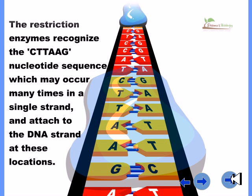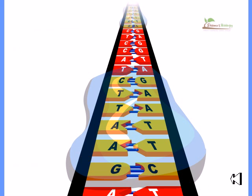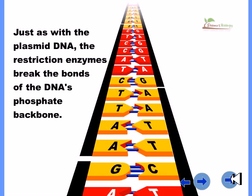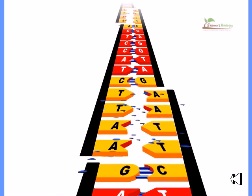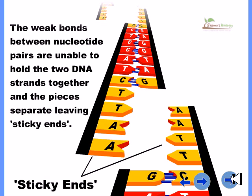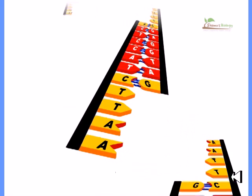The restriction enzyme recognizes the CTTAAG nucleotide sequence which may occur many times in the single strand and attaches to the DNA strands at these locations. Just as with the plasmid DNA, the restriction enzyme breaks the bond of the DNA's phosphate backbone. The weak bonds between nucleotide pairs are unable to hold the two DNA strands together and the pieces separate leaving sticky ends at both ends.